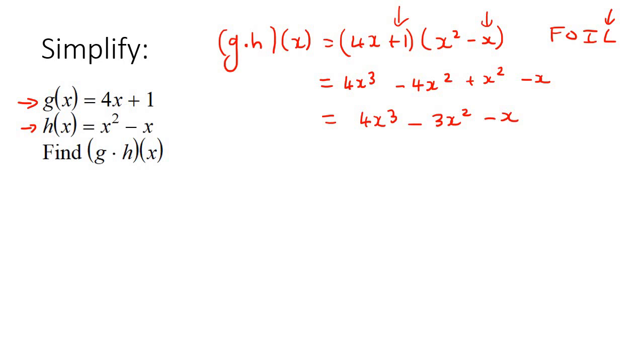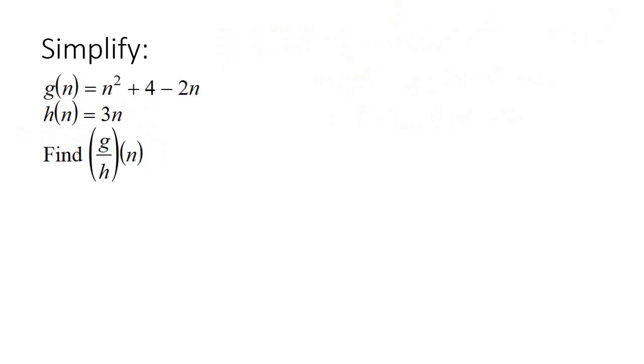In our next example, we're actually going to be dividing them now. Here's our next one. So we're going to be dividing them now. It's g at the top, h at the bottom. So we're going to say (g/h)(n) is going to equal n² + 4 - 2n over 3n.